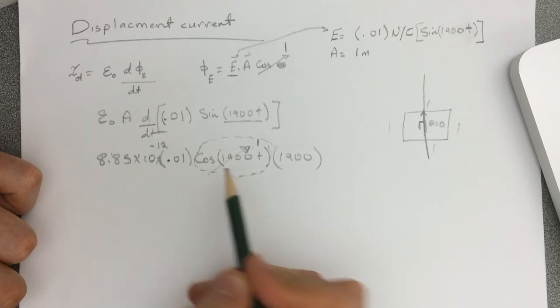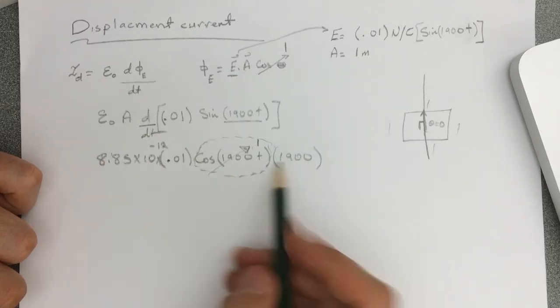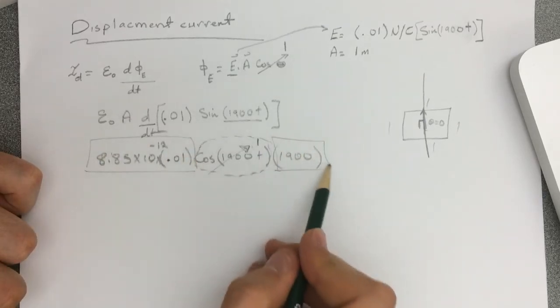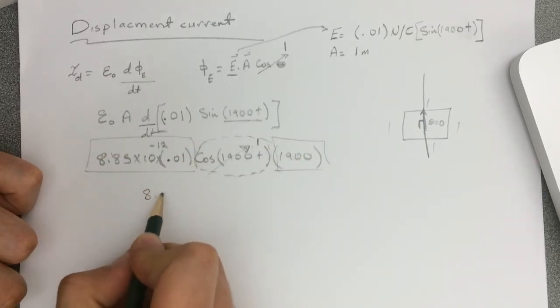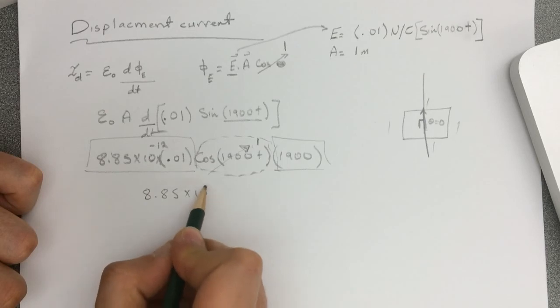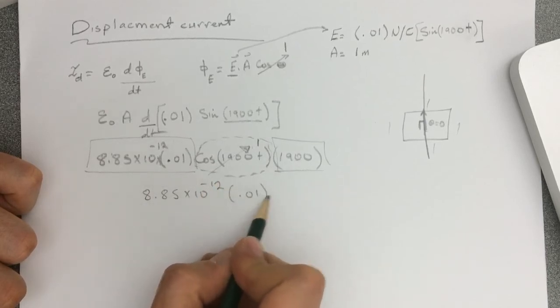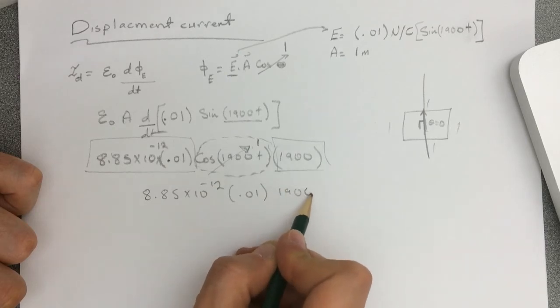And just plug and check here, put your numbers. So it's 8.85 times 10 negative 12 times 0.01 times 1900.